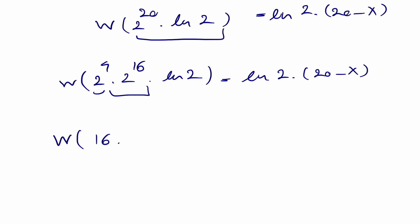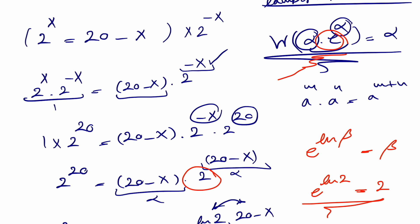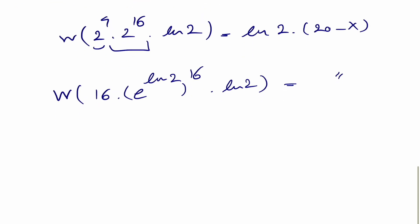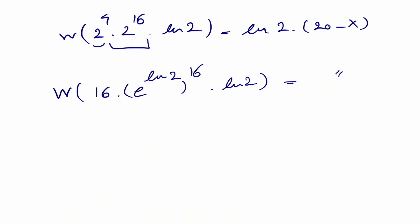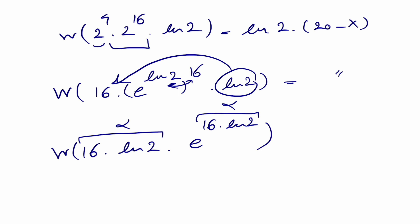Reviewing the Lambert function form W(α·e^α) = α, we replace the base 2 using e^(ln2) = 2, so 2^16 becomes e^(16·ln2). This gives us W(16·ln2 · e^(16·ln2)). Now this matches exactly the Lambert function input α·e^α, where α = 16·ln2. So W(16·ln2 · e^(16·ln2)) = 16·ln2.